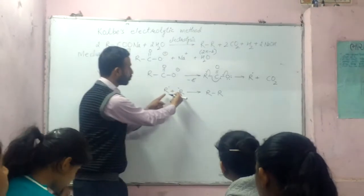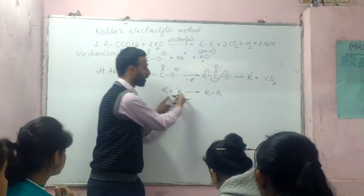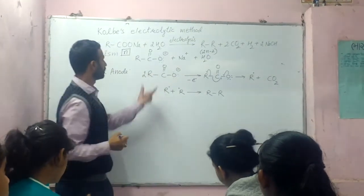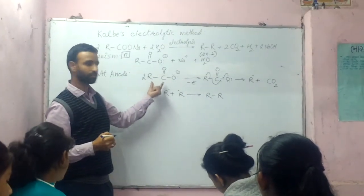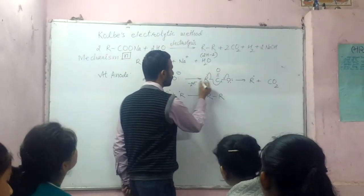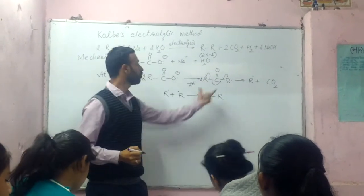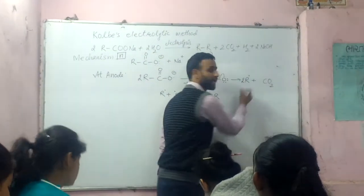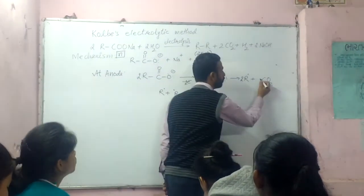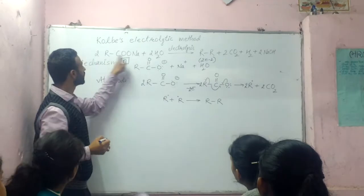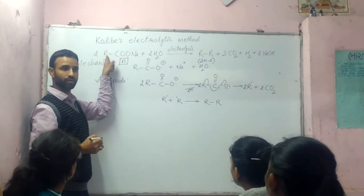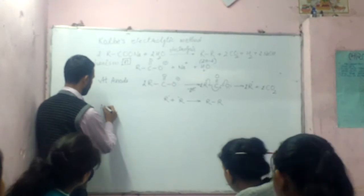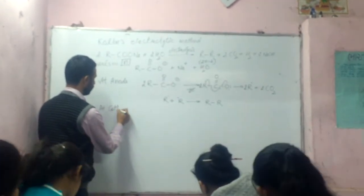Since we need two alkyl free radicals to get one alkane, two molecules of the sodium salt each lose one electron to give two alkyl free radicals and two molecules of carbon dioxide. That's why we use two molecules of the reactant.